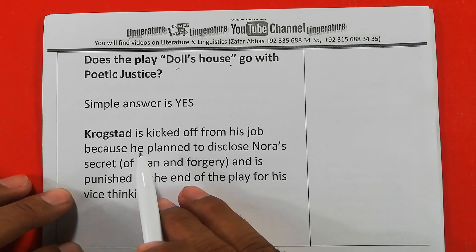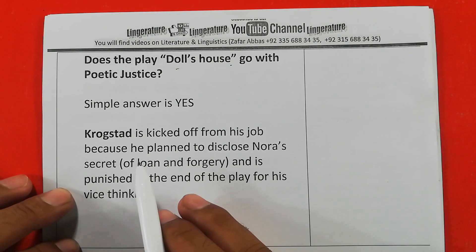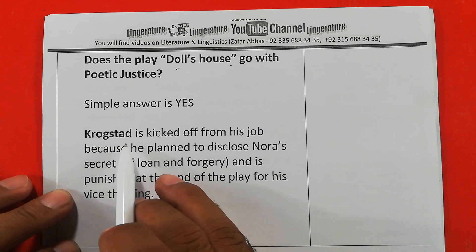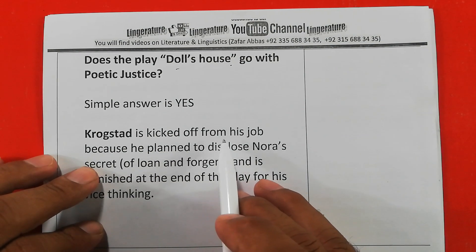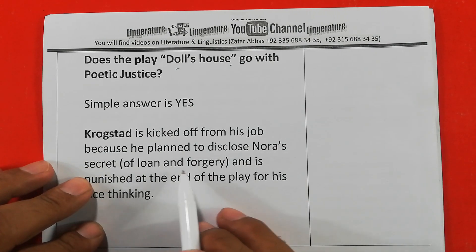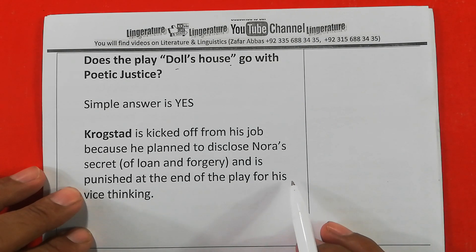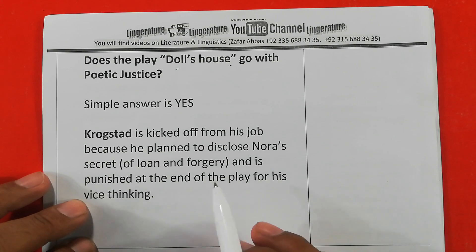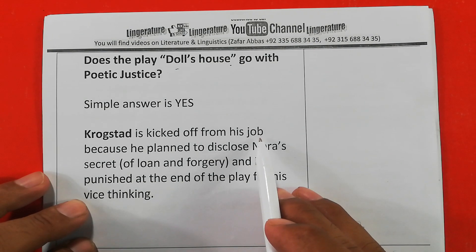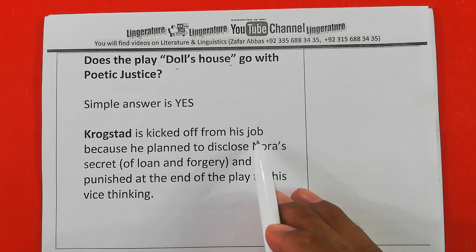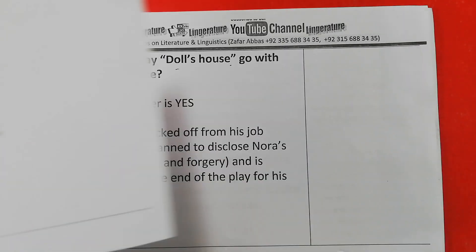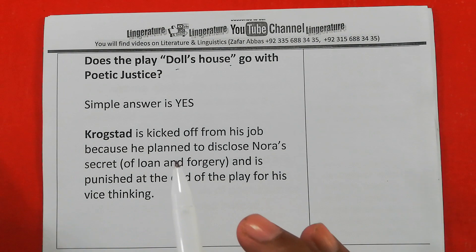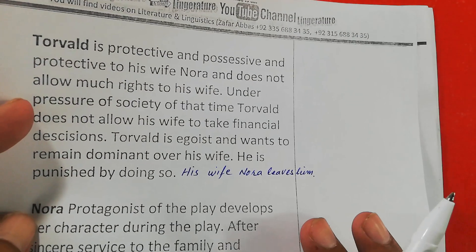The answer is yes, and I will justify it with three major characters in Doll's House. First, Krogstad: Krogstad is kicked off from his job because he planned to disclose Nora's secret of loan and forgery. He is punished at the end of the play for his ill thinking — he was not thinking properly toward Nora. Ibsen kicked him off from his job at the bank because Krogstad had ill feelings.